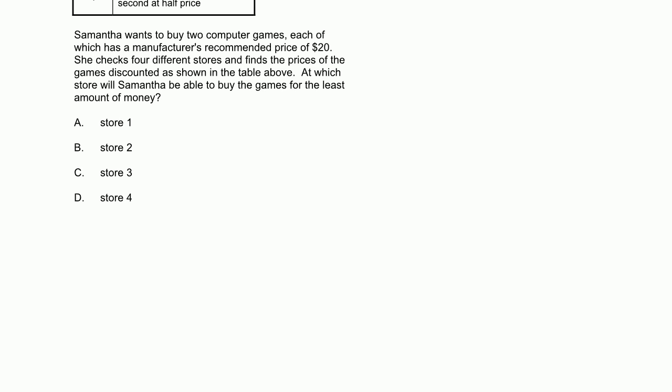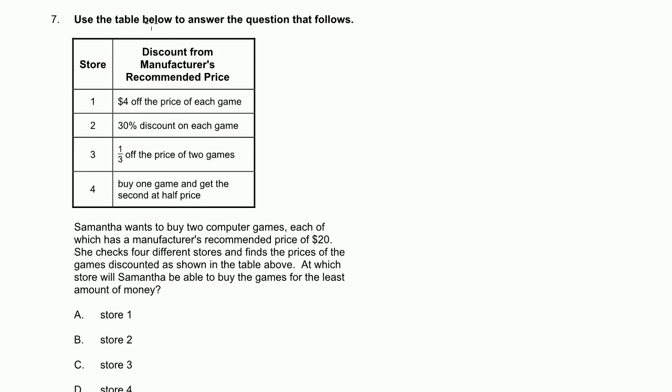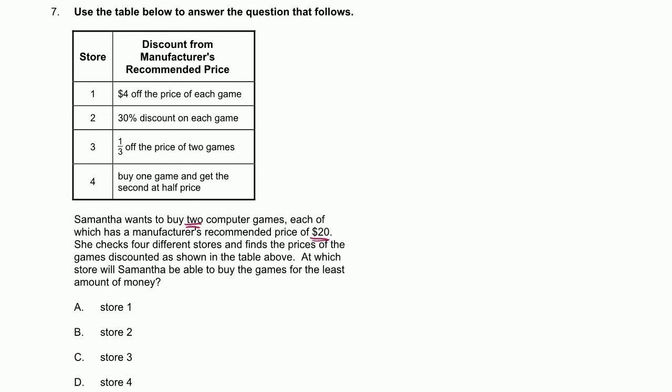Next problem. Use the table below to answer the question that follows. Okay, let's see. They have a store, different stores. Discount for manufacturer's recommended price. Okay, there we go. So they're all discounting games. Samantha wants to buy two computer games, each of which has a manufacturer's recommended price of $20. She checks four different stores and finds the prices of the games discounted as shown in the table above. At which store will Samantha be able to buy the games for the least amount of money? That makes sense. You want to find the cheapest place.